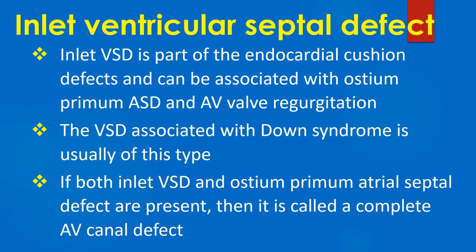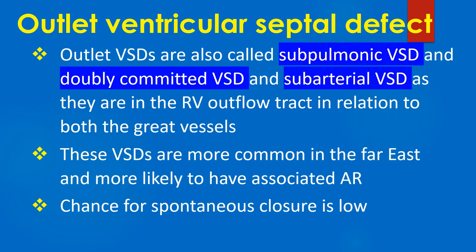Outlet VSDs are called subpulmonic VSD, doubly committed VSD, and subarterial VSD, as they are in the right ventricular outflow tract in relation to both the great vessels. These VSDs are more common in the Far East and more likely to have associated aortic regurgitation. The chance for spontaneous closure is low; hence, some advocate surgical closure even for small outlet VSD to prevent future development of progressive aortic regurgitation.